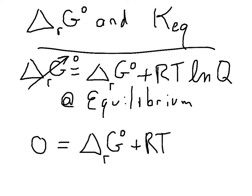We give that a special name if we're at equilibrium. We call it the equilibrium constant.